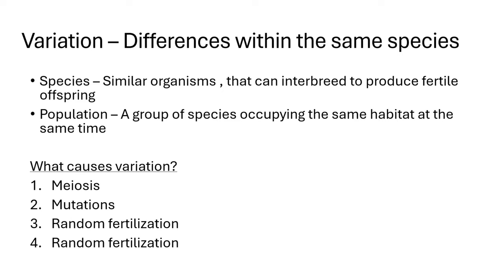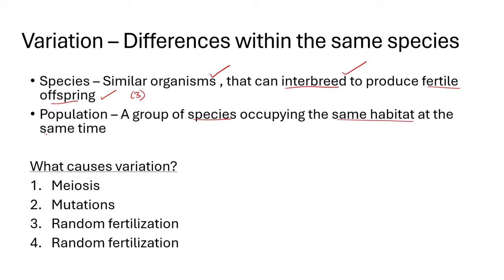Now let's look at the concept of variation. Even though we might have the same species — like humans — we tend to be different. Before we get there, let us define the word species. Species are similar organisms that can interbreed to produce fertile offspring. This definition is usually three marks, so know it exactly: similar organisms, they can interbreed, and the offspring produced must also be fertile.